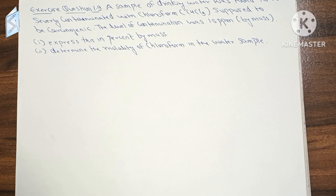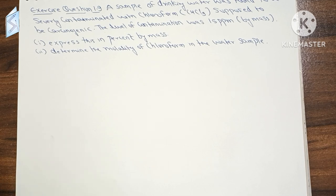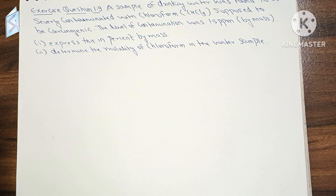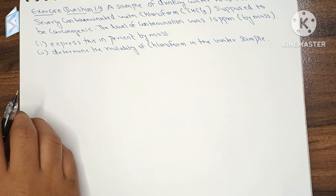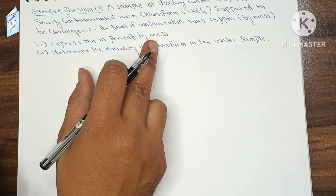A sample of drinking water was found to be severely contaminated with chloroform CHCl3, which is carcinogenic, meaning cancer-causing. The level of contamination was 15 ppm by mass, and we have to express it in percent by mass.